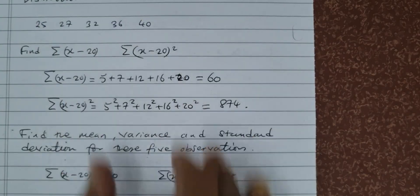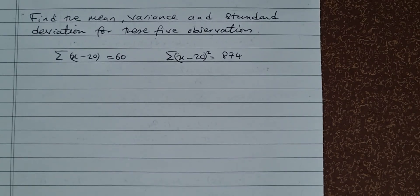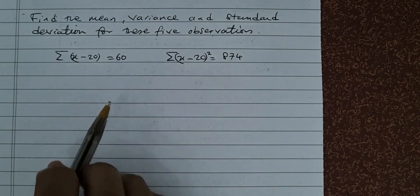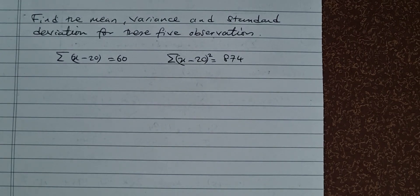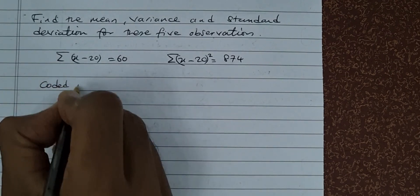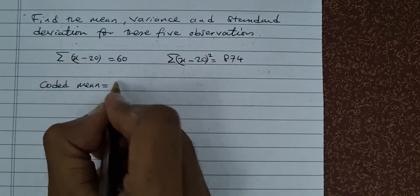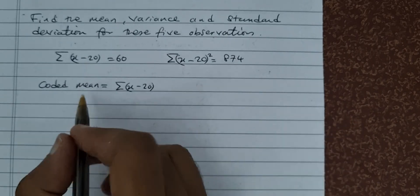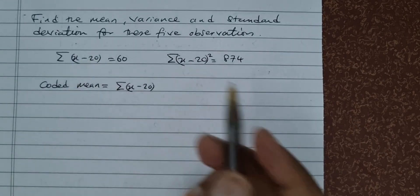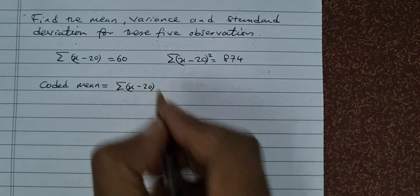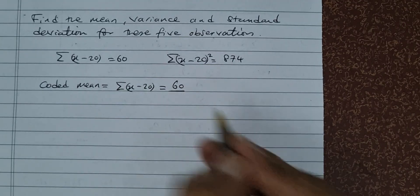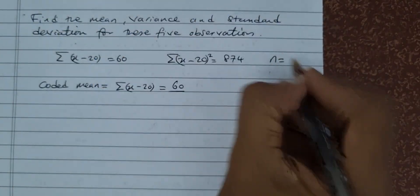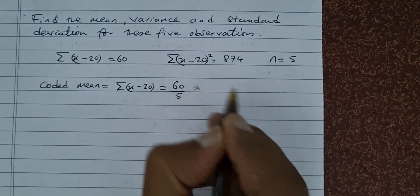You only have this piece of information and you want to find the mean, variance, and standard deviation. How do we find the mean? Finding the mean is not very hard. You find the coded mean first. The coded mean means you take the summation of (x minus 20) — it's coded because 20 is taken away from it. So the summation of (x minus 20) equals 60, and then you divide by the number of observations which is 5. So you divide by 5, and you get your coded mean, which is 12.